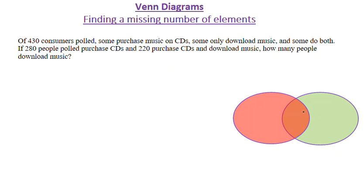This is the intersecting part in my Venn diagram. Now they say here, if 280 people purchased CDs — so this is my first number to take care of. Before I do anything, I need to name my sets. In the Venn diagram, this red circle represents the people who purchase CDs, while the green one represents people who download music.